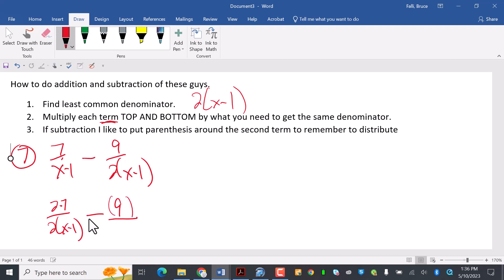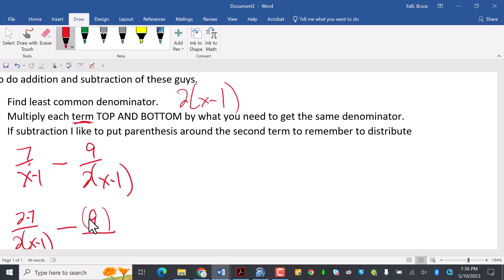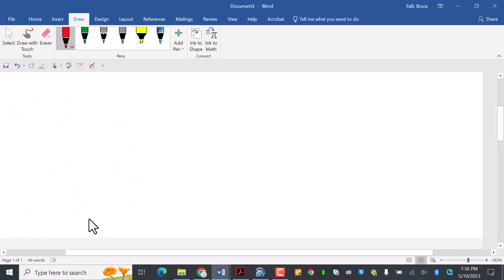So, two times seven over two x minus one. This term is just fine. Nine, I'm going to put it in parentheses. Usually if it was like nine minus three a or something like that, I'd have to distribute it. But I'm just going to do the parentheses this time so you see what I'm talking about.